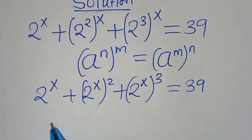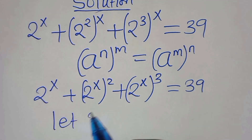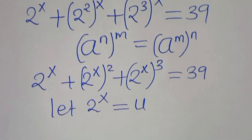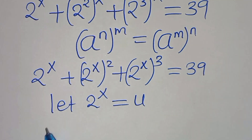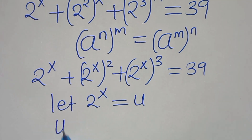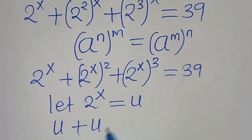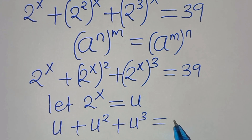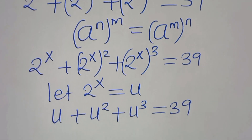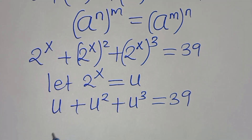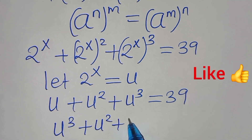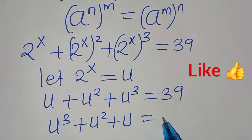The next step is to let 2 to the power of x be equal to u. Substituting u, we have u plus u squared plus u to the power of 3, this is equal to 39. Rearranging this equation we have u to the power of 3 plus u to the power of 2, then plus u, this is equal to 39.